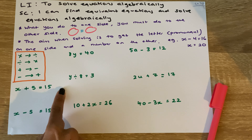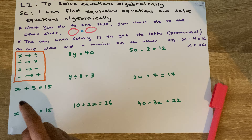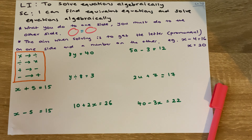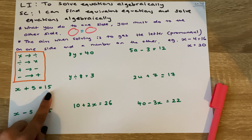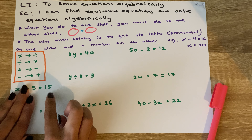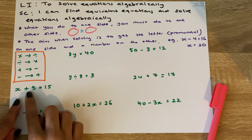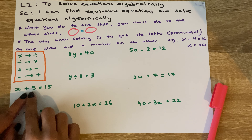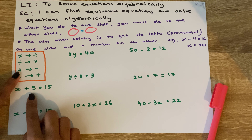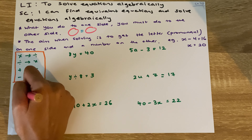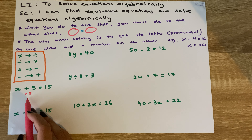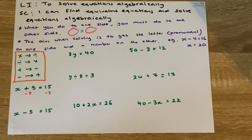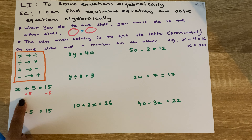Say we've been given this equation: x plus 5 equals 15. Our aim is to always get our letter on one side and our numbers on the other — we want to leave our letter on its own. Here I've got x plus 5 on one side and 15 on the other. I want to get rid of the number on this side, so I use the opposite of plus 5, which is subtract. We're going to subtract 5 from both sides — what we do to one side, we have to do to the other. So plus 5 take away 5 cancels out.